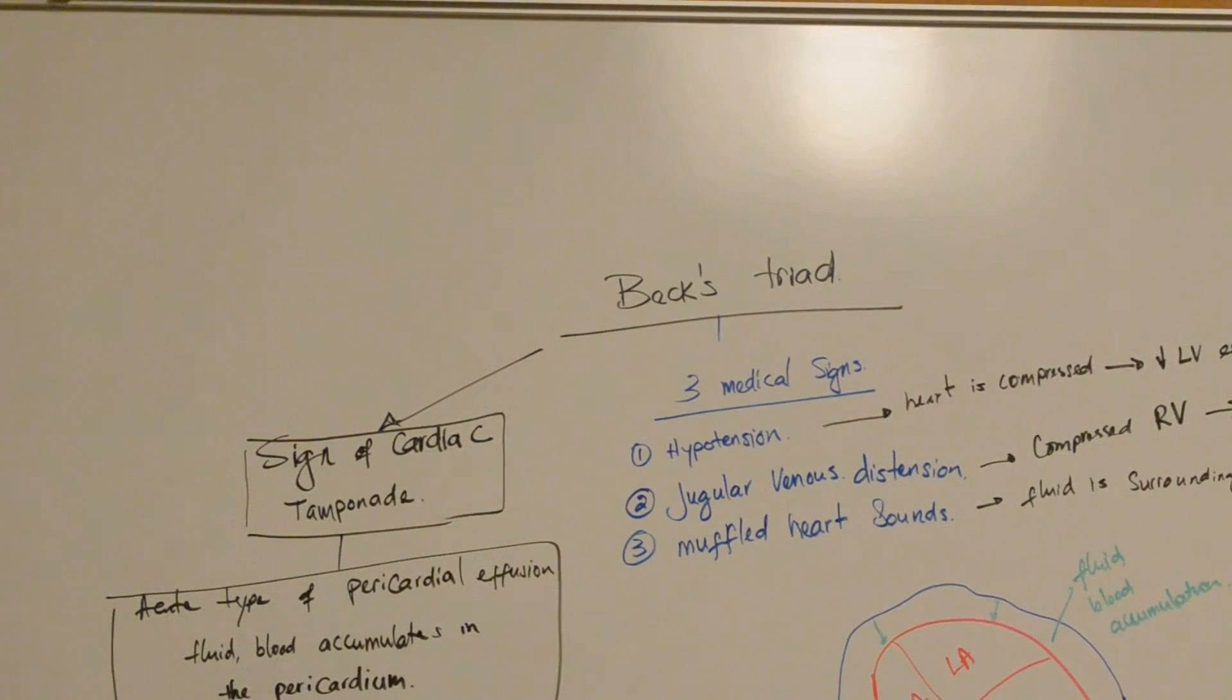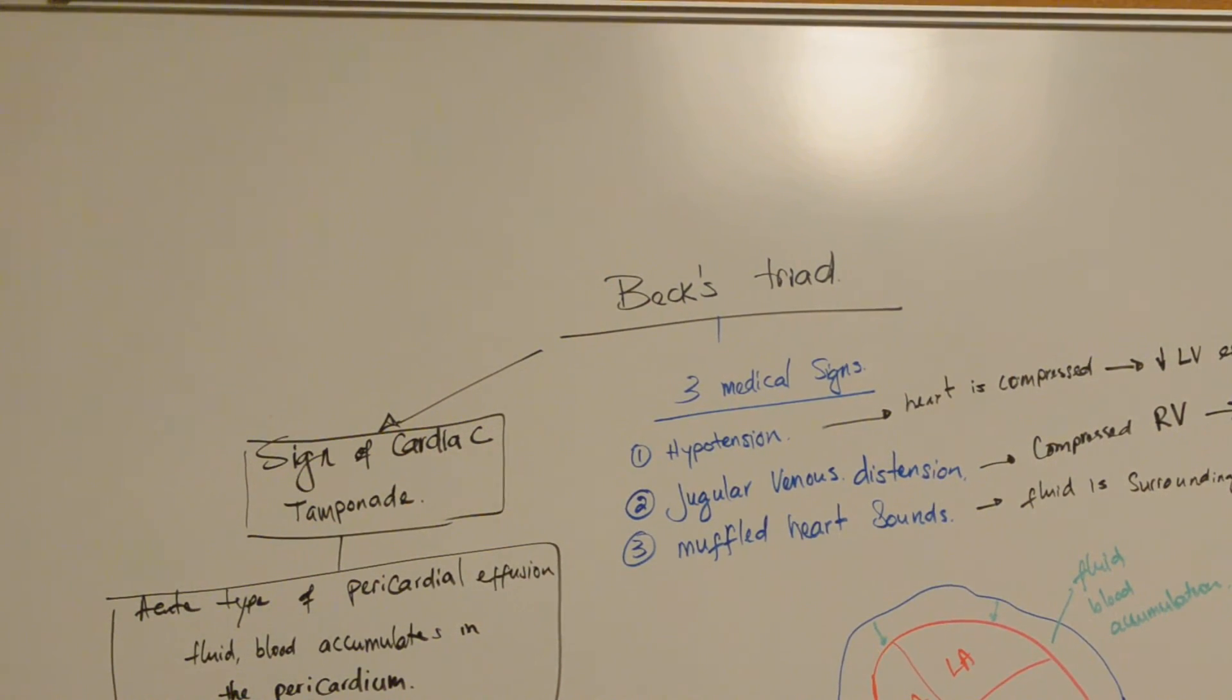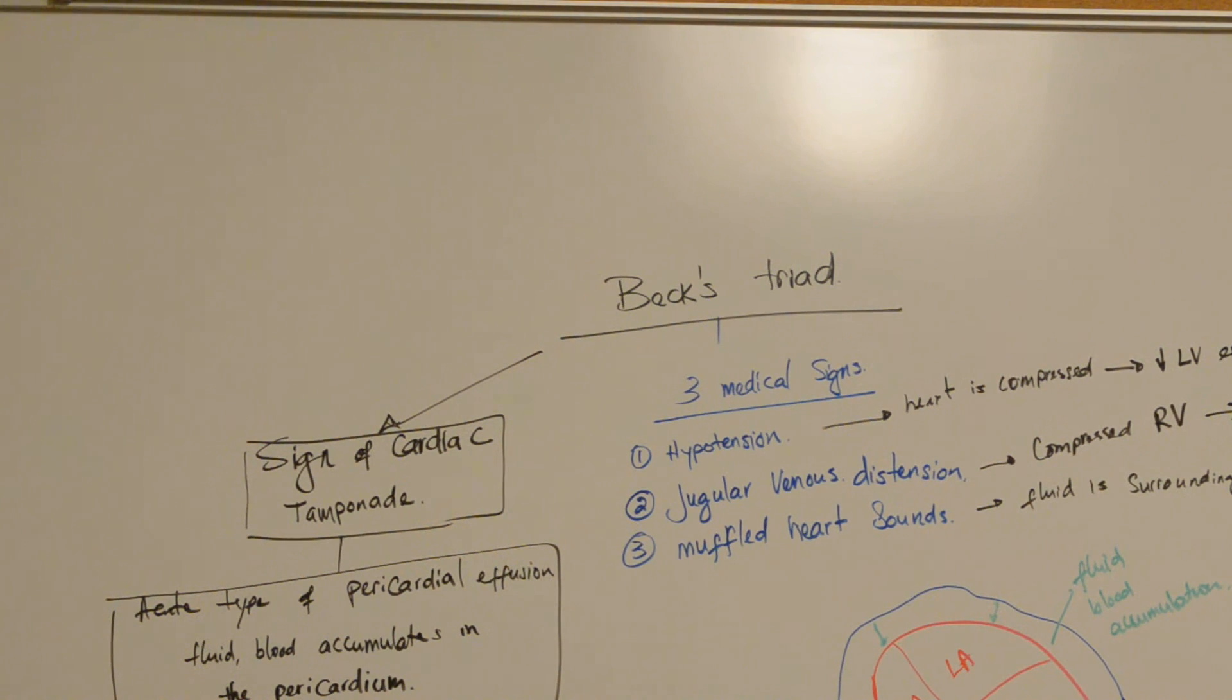Beck's triad is a sign of cardiac tamponade, also known as pericardial tamponade.